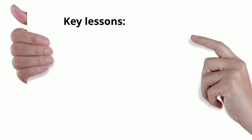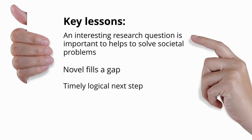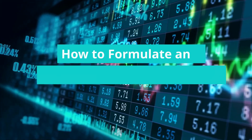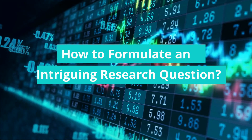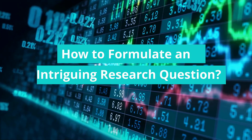The key lessons of this lecture are simply that an interesting question is important — meaning it helps to solve societal problems or understand fundamental phenomena; novel — meaning it fills a gap; and timely — meaning it seems to be the logical next step. These are the goals of a research question. The next question is: how do we approach this in a way that makes it most likely we can formulate an important, novel, and timely question? That is what we're going to show you in the next video.